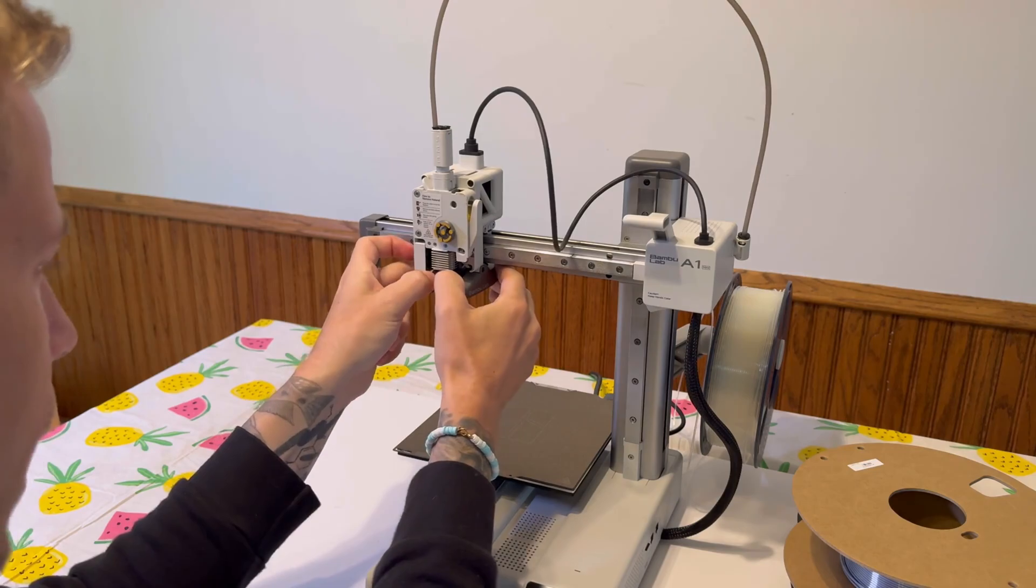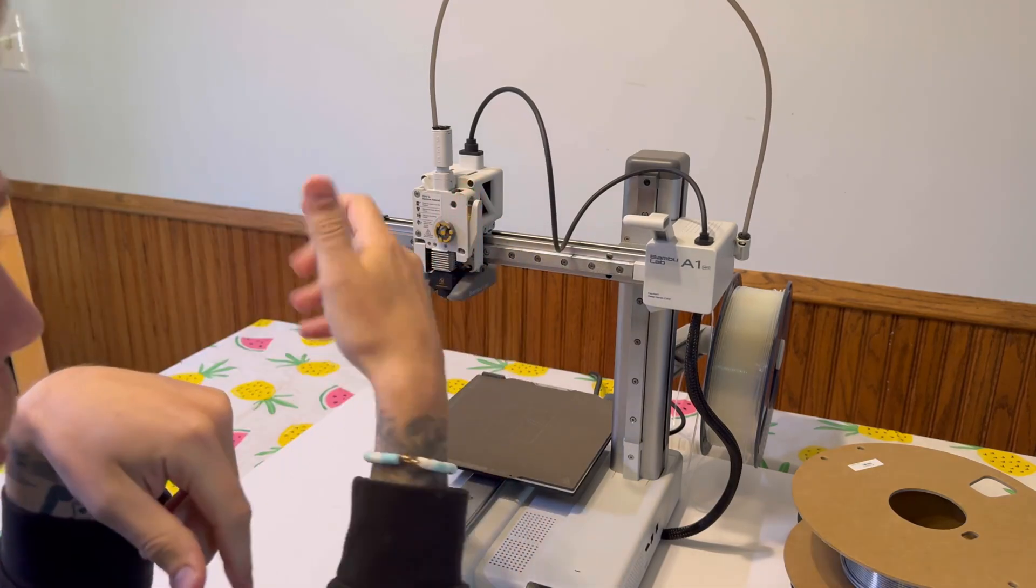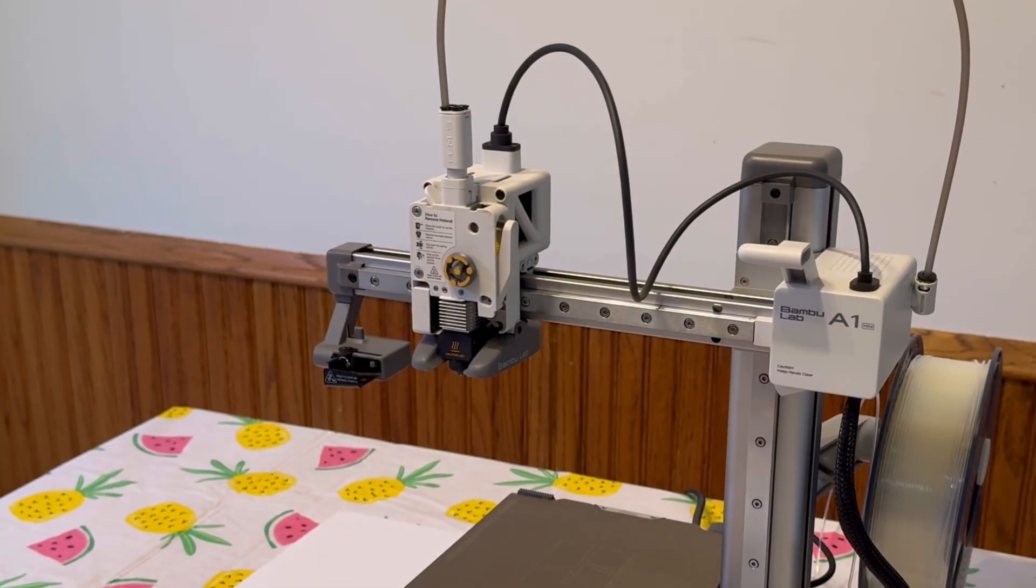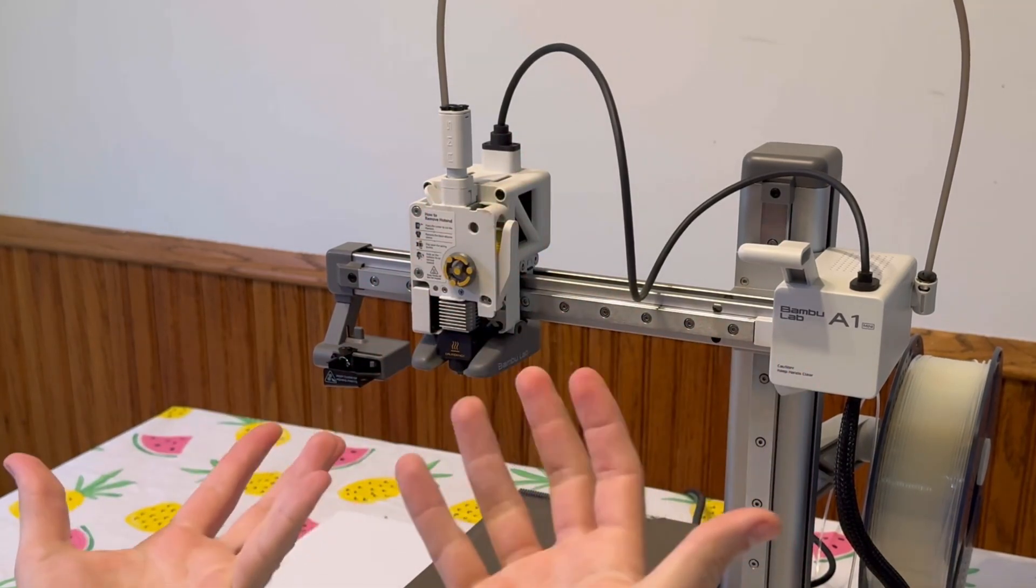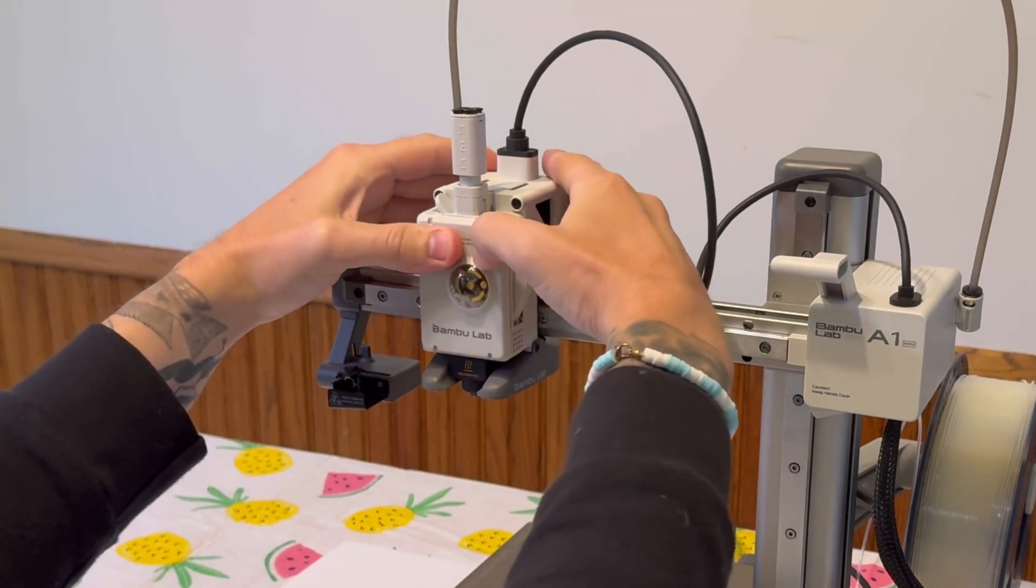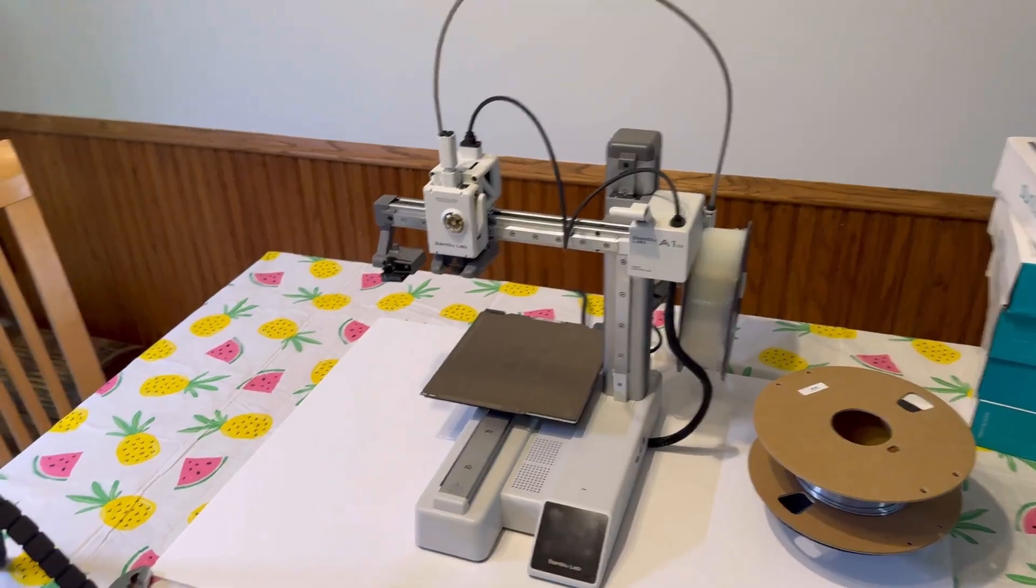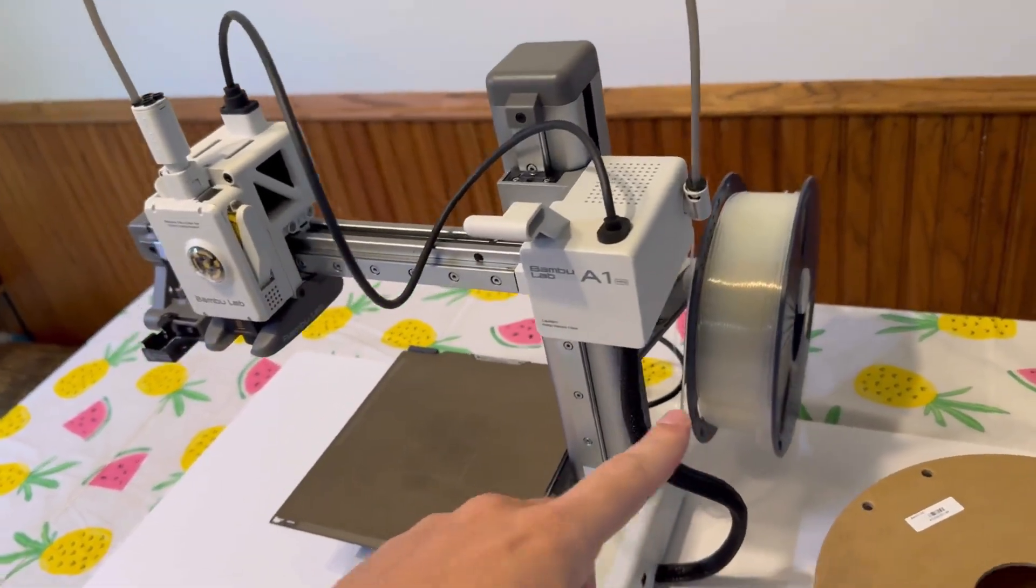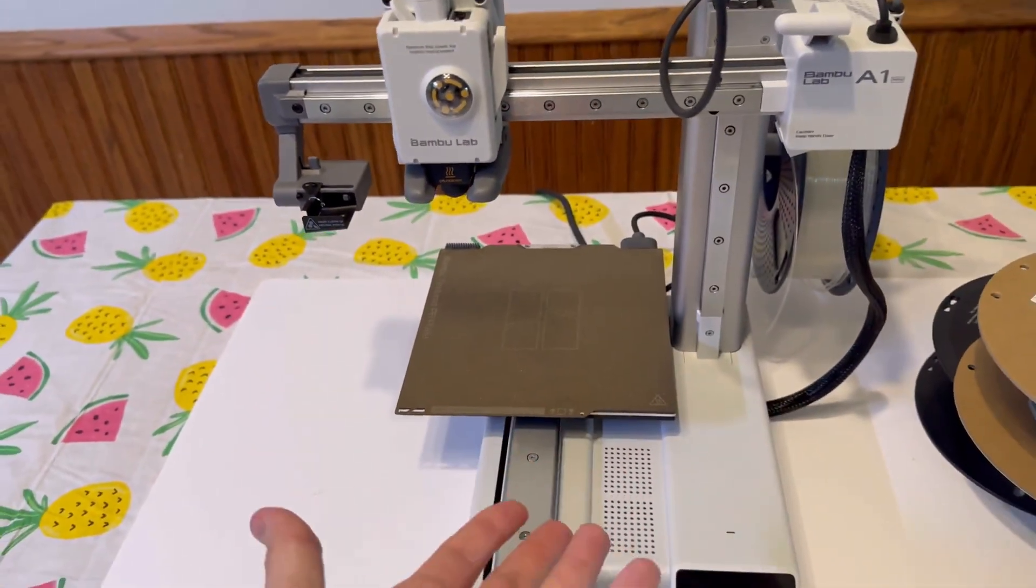And again, guys, if you're continuing to have clogging, change out your nozzle. That's going to be the fix, honestly, for most of your clogs or broken filament in your Bamboo Lab A1 Mini. Then reattach the face plate here, which is really easy to do. Just click that on there. And then just go ahead and reload your filament, extrude it out of the nozzle, and test a print.